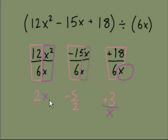We'll just do a little cleanup. Put these guys back together in a nice row. So it looks like 2x minus 5 over 2 plus 3 over x. And that's it.